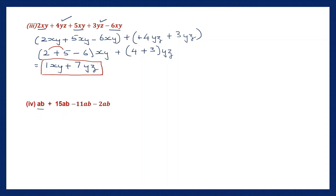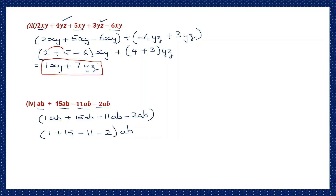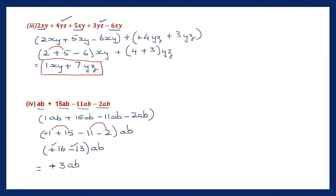Question 4: ab plus 15ab minus 11ab minus 2ab — they're all like terms. Writing only the numbers: 1 plus 15 minus 11 minus 2, all times ab. Add same signs: plus 1 and plus 15 give plus 16. Minus 11 and minus 2 give minus 13. Signs are different: put the sign of the bigger number and subtract. 16 minus 13 is 3ab. So the answer is 3ab.